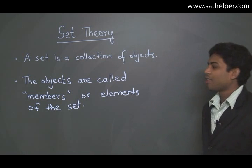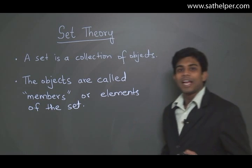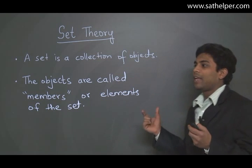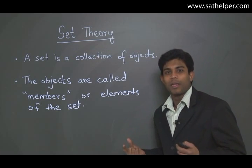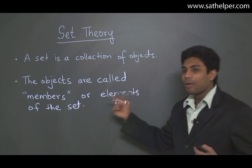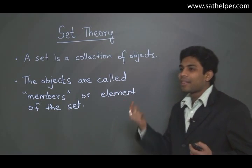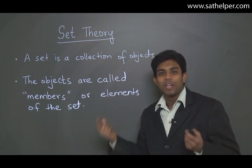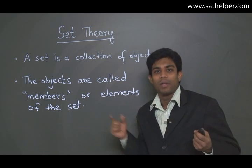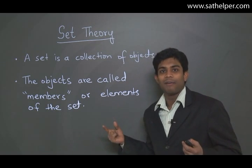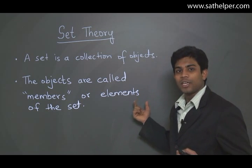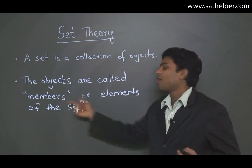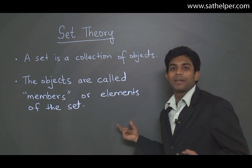A set is simply a collection of objects - similar objects or objects with some similar property. The objects are called members of the set, and a set is named depending on the property that the elements have. To define it: a set is a collection of objects, and the members are called the members or elements of the set.